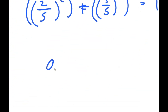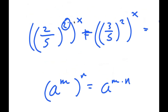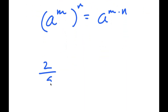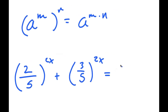From here, if I have something in the form a to the power of m to the power of n, this is equal to a to the power of m times n. So the 2 and x multiply, giving me 2 over 5 to the power of 2x, plus 3 over 5 to the power of 2x, is equal to 1.